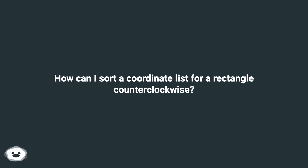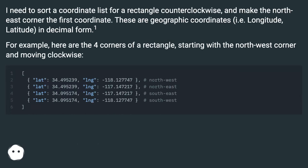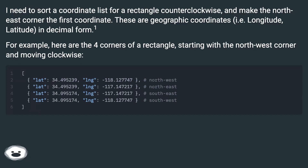How can I sort a coordinate list for a rectangle counterclockwise? I need to sort a coordinate list for a rectangle counterclockwise and make the northeast corner the first coordinate. These are geographic coordinates, i.e. longitude, latitude, in decimal form.